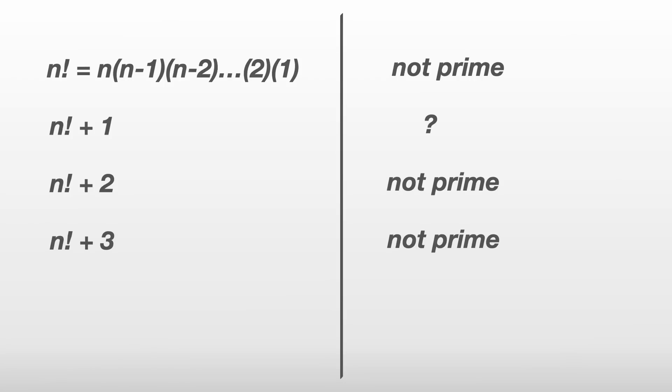So, here's where we are. n factorial is not prime. For n factorial plus 1, we don't know if it's prime or not. Then, for n factorial plus 2, n factorial plus 3, and n factorial plus anything up to n, we can show are not prime by factoring out the number we've added.